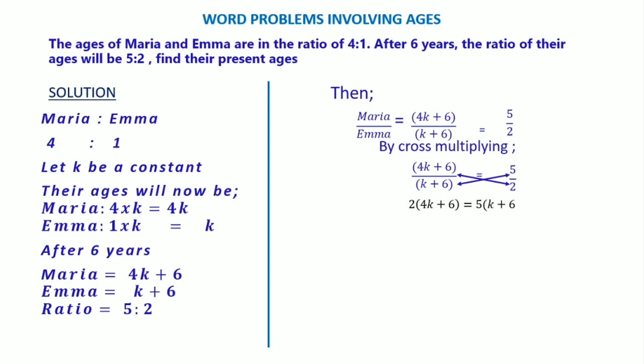We shall arrange and get 2 open bracket 4k plus 6 equals 5 open bracket k plus 6. We can open the bracket by multiplying: 2 times 4k is 8k, plus 12 equals 5k plus 30.